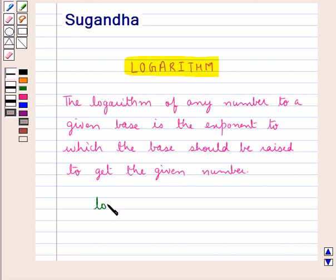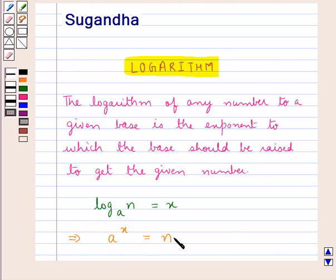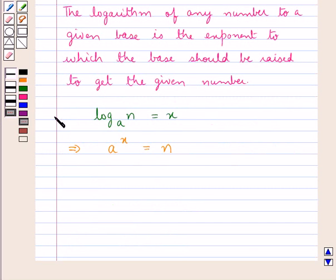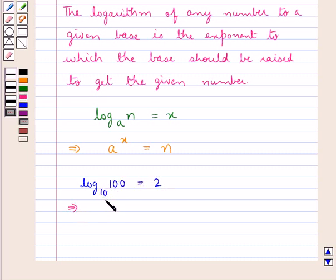So, if we have log of the number n to the base a is equal to x, this means a to the power of x is equal to n. For example, if we have log 100 to the base 10 is equal to 2, this would mean that 10 which is the base to the power of 2 is equal to 100.